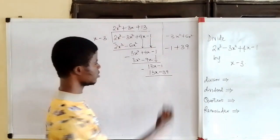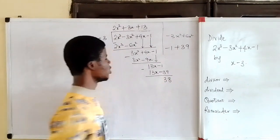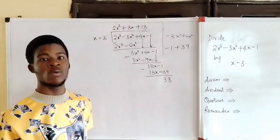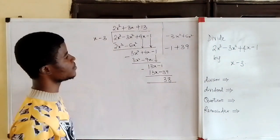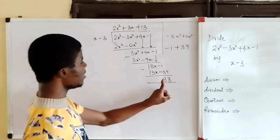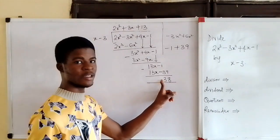This will give us what? 38. So at this stage we cannot continue to divide, so we'll stop here. That is to say that the remainder is 38.